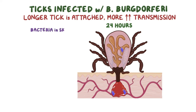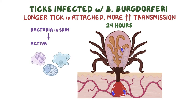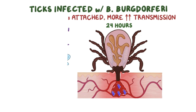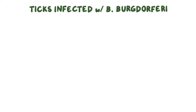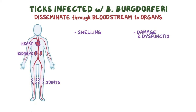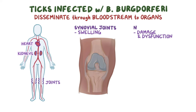After the bacteria get into the skin, they cause a local infection that activates local immune cells, leading to an inflammatory response. After several days, the bacteria can disseminate through the bloodstream to distant tissues like the heart, kidneys, and joints. Inflammatory responses in these tissues can cause swelling, damage, and dysfunction, particularly in the synovial joints and around nerves.